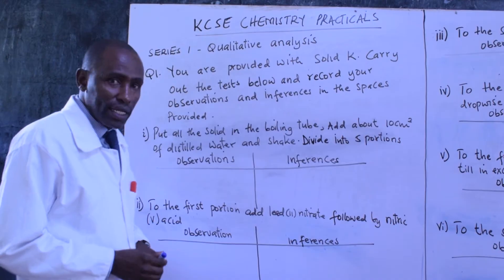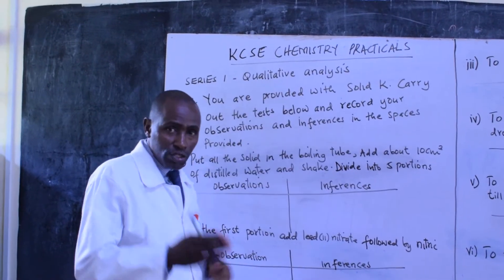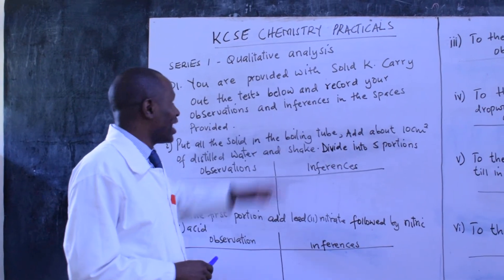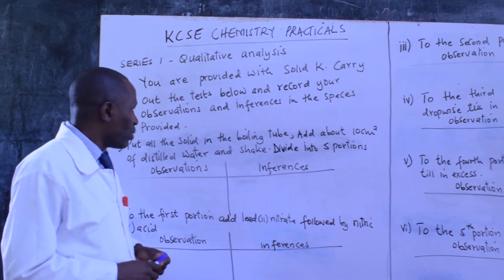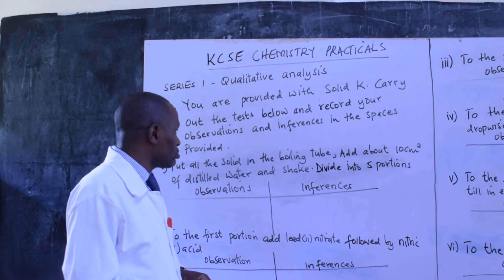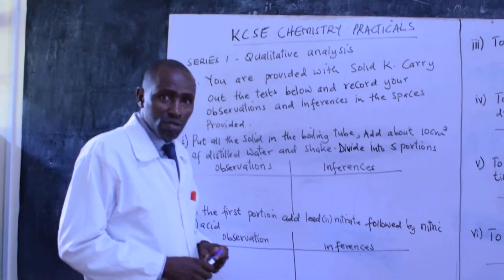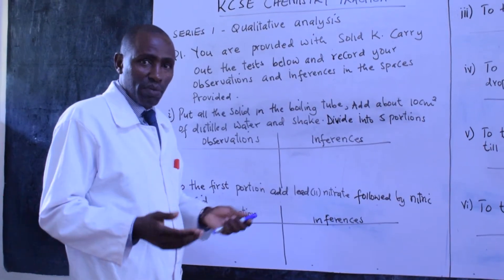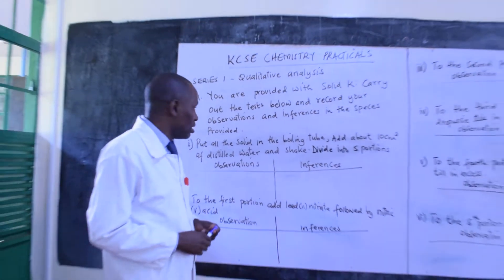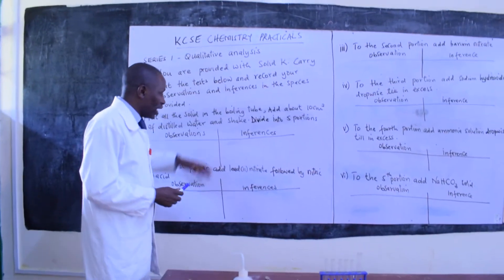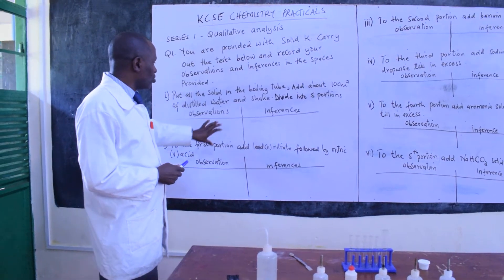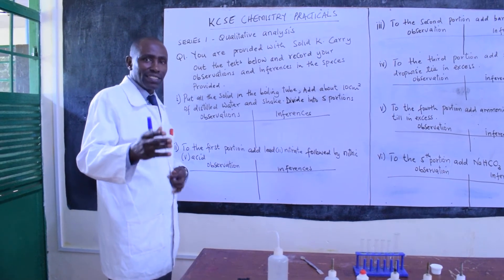Qualitative analysis can be divided into two. We have inorganic chemistry, which basically deals with the analysis of salts. And number two, we have organic qualitative analysis, which deals with organic compounds like alkanes — the saturated hydrocarbons — alkenes and alkynes, what we normally refer to as unsaturated hydrocarbons, and then alkanols and alkanoic acids. With inorganic, when we talk about the analysis of salts, we are basically looking at the test of anions and cations.